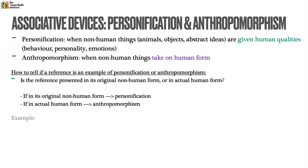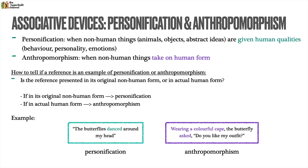Here's an example to illustrate. With personification, a description would read 'the butterflies danced around my head' — dancing is only something humans can do, but here it's ascribed to the butterflies. For anthropomorphism, the butterfly would literally have to show up in a human form: 'Wearing a colorful cape, the butterfly asked, do you like my outfit?' Wearing a colorful cape is not something a butterfly can do on its own — here the butterfly is showing up as if it were a human being wearing this colorful outfit.